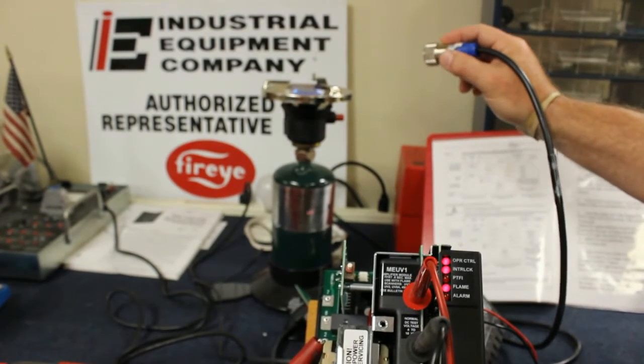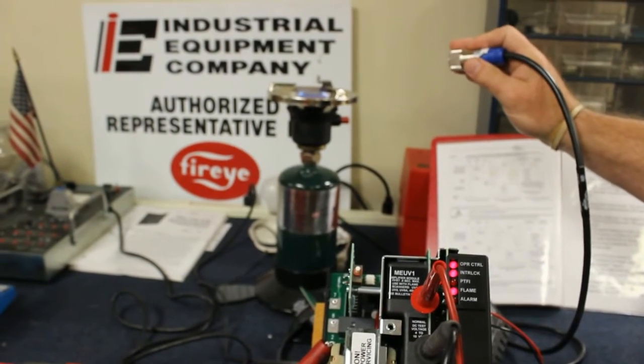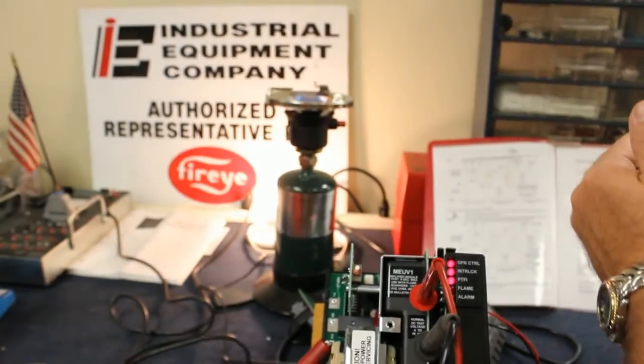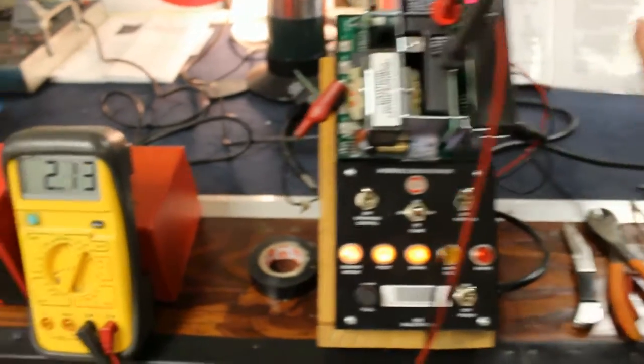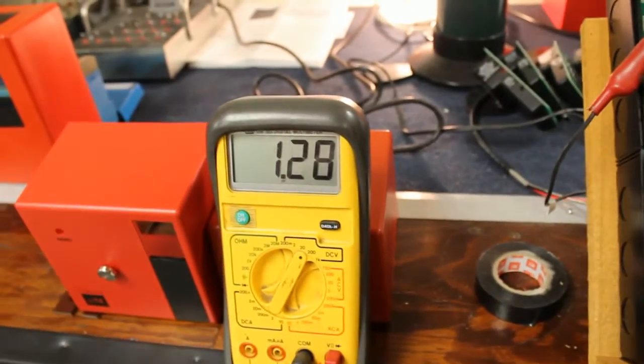However, if there were something wrong with the scanner, I would lose signal. It would try to relight as it is now, and you can see on my meter that my signal is falling way down.